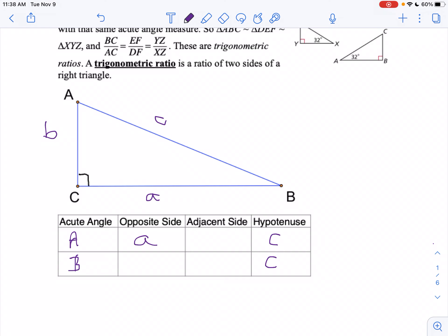And then adjacent to angle A means next to. Now the hypotenuse cannot be your adjacent side. So that's why I filled in the hypotenuse first. So what's next to angle A is side b.